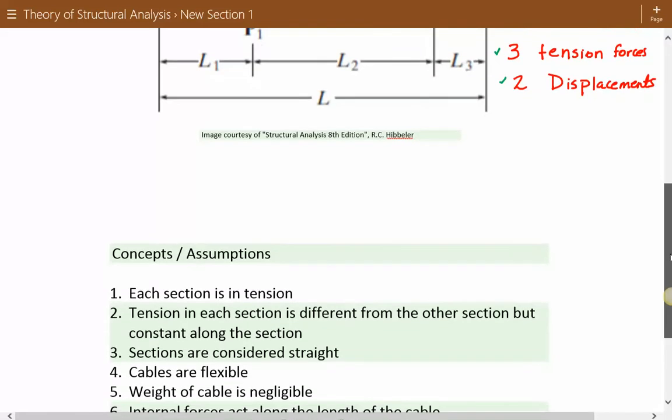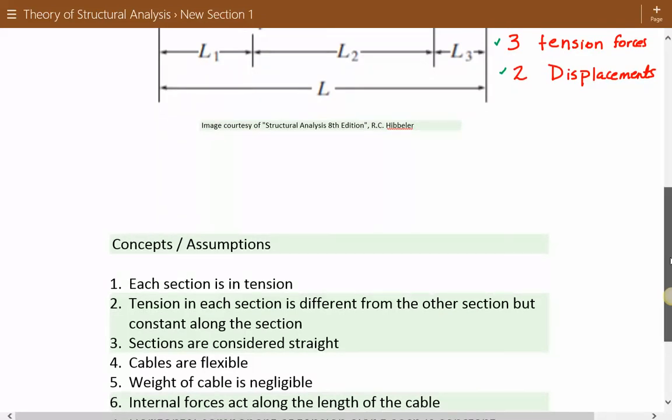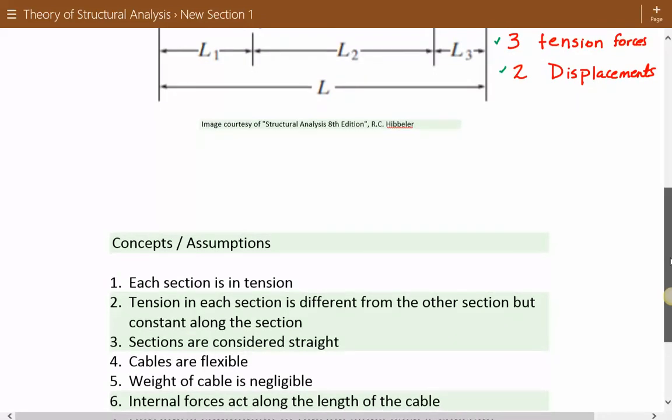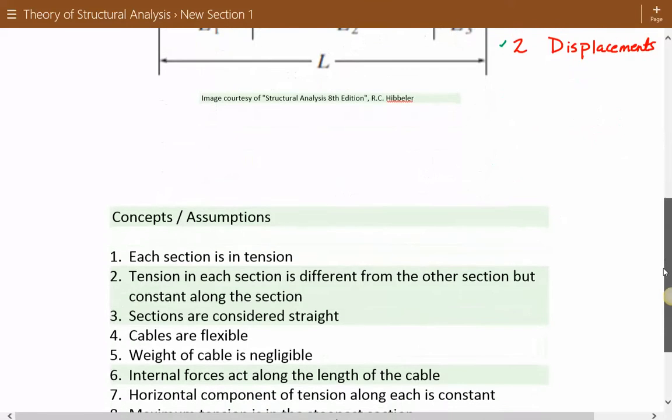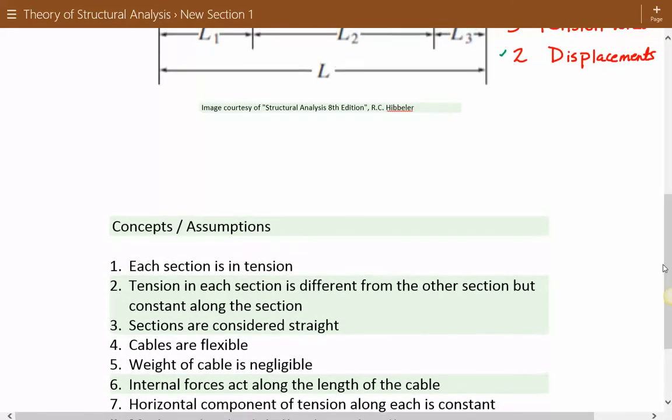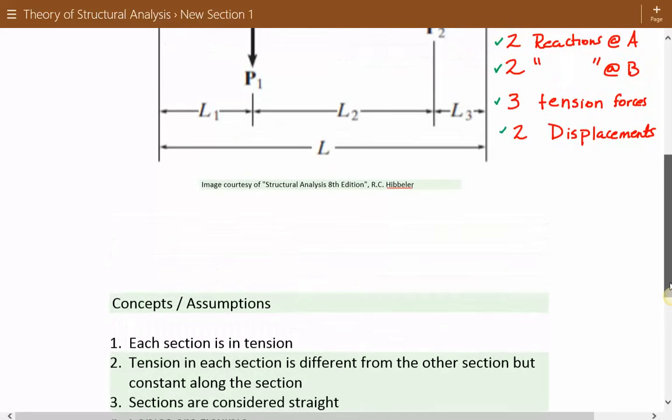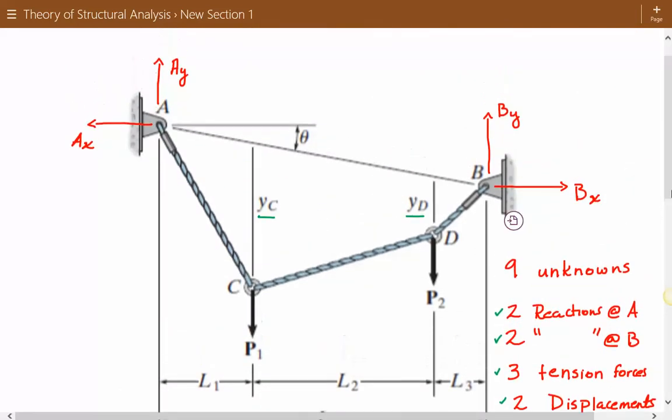The sixth point is that the internal forces acting along the cable act along the length of the cable. And number seven, the horizontal component of tension along each section is constant. So in section AC and CD and DB, the horizontal component of tension is constant.